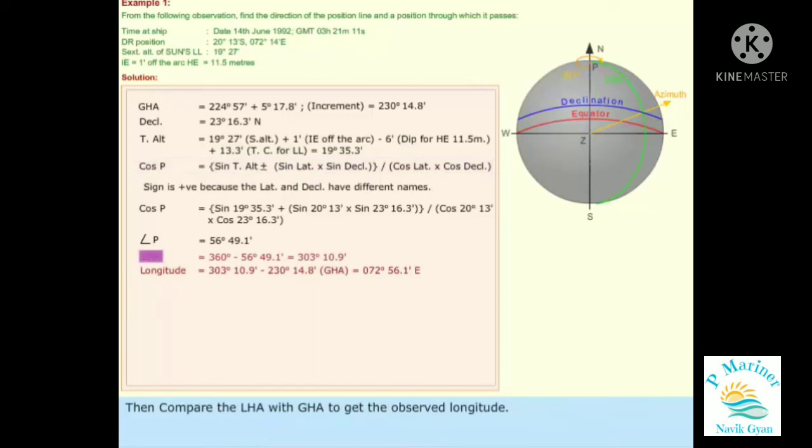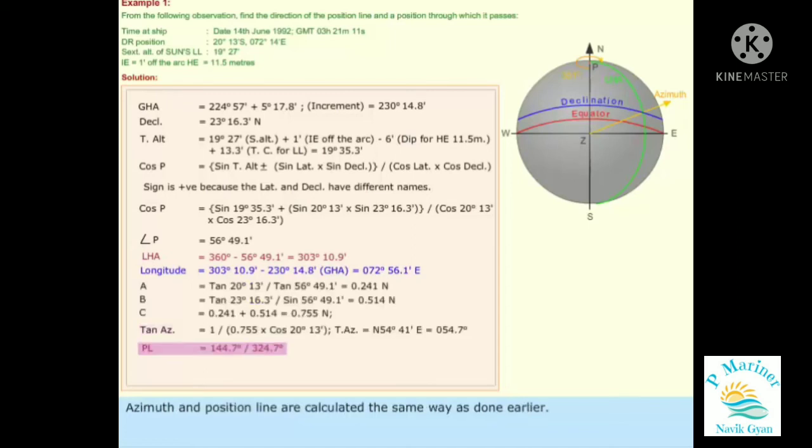Compare the LHA with GHA to get the observed longitude. Azimuth and position line are calculated the same way as done earlier.